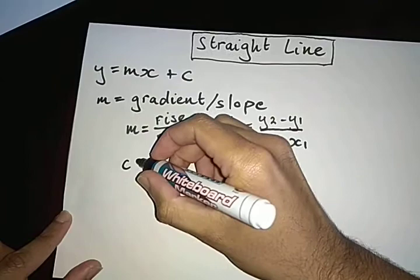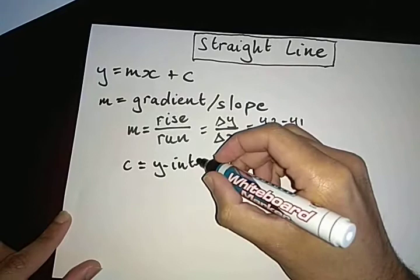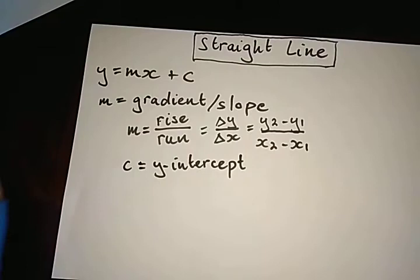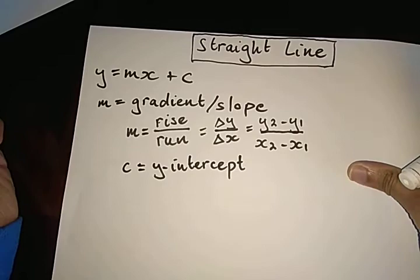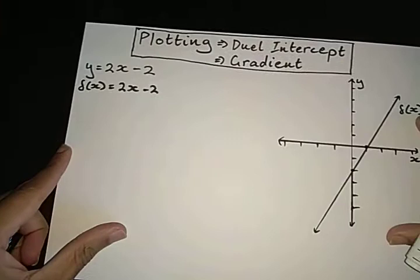Now, let's look at our c value. Our c value is known as our y-intercept. And this is a very important feature, especially when we're going to get to plotting the straight line graphs on the Cartesian plane. So let's actually go ahead and take a look at that.